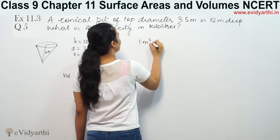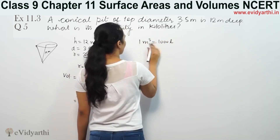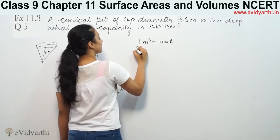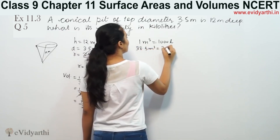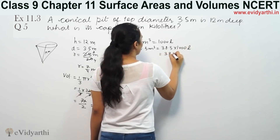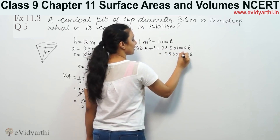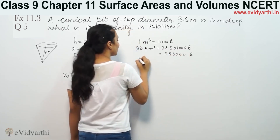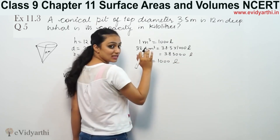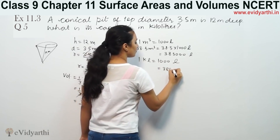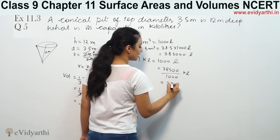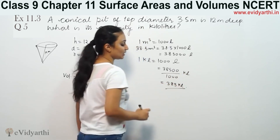We know that 1 meter cube is equal to 1000 liters. So 38.5 meter cube will be equal to 38,500 liters. Now 1 kiloliter equals 1000 liters, so we divide by 1000. That gives us 38,500 by 1000, which equals 38.5 kiloliters.